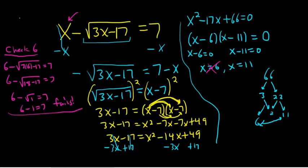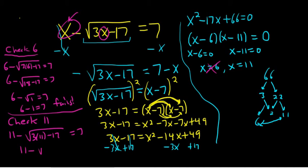I'm hoping it's 11. Let's try. So let's check 11. If it's not 11, then the answer is no solution. So 11 minus, let's see, plugging in the 11 here for all the x's. So 3 times 11 minus 17, that should be equal to 7. So 11 minus, let's see, 33 minus 17. 3 times 11 is 33. So 33 minus 17, using my calculator, is 16. So the square root of 16 is 4. So you get 11 minus 4 equals 7. Hoorah! We found the answer. x equals 11.